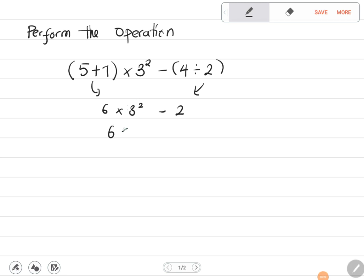So I'm going to have 6 multiplied by what is 3 squared? 3 squared is 9, minus 2. According to BODMAS, we cannot subtract before multiplying, so we multiply 6 and 9, and we get 54.